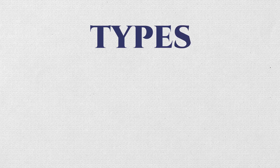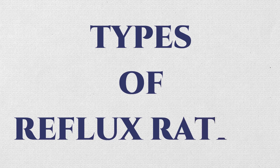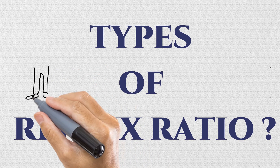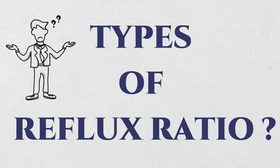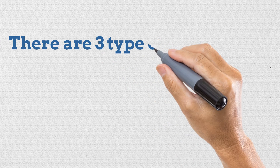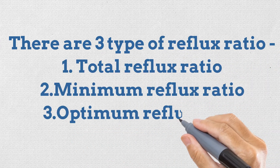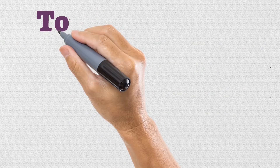Hello guys, welcome back to another video. As discussed in the earlier video, we were talking about reflux ratio and the conditions where reflux ratio is increased or decreased. There we mentioned that there are three types of reflux ratio — total reflux ratio, minimum reflux ratio, and optimum reflux ratio — and now we will discuss each in detail.